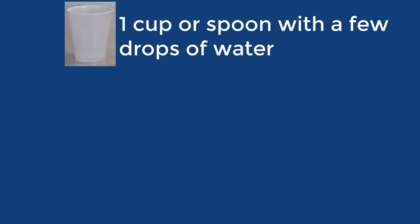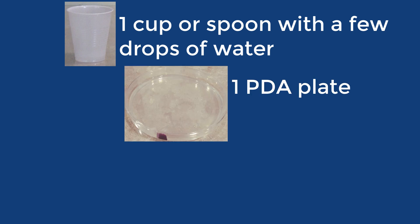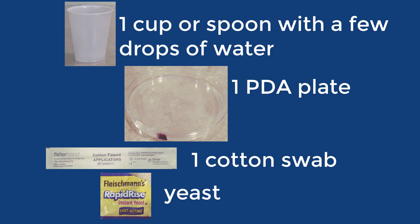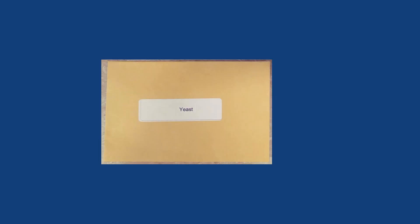For this activity, you will need one cup with a few drops of water, or even just a spoon, one PDA plate marked with a dark purple line down the side, one cotton swab, and baker's yeast. Your supply box comes with a small amount of baker's yeast in a little envelope. It may not look like a lot, but it is plenty for this activity.